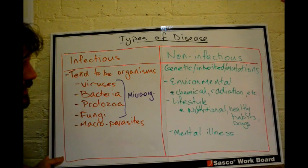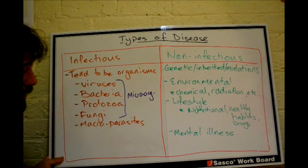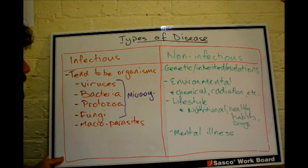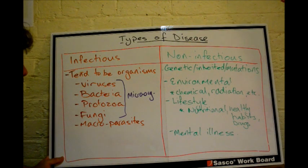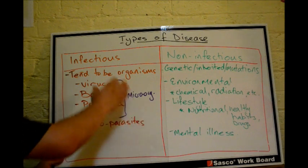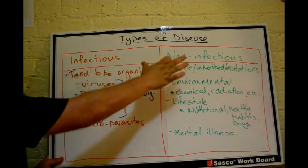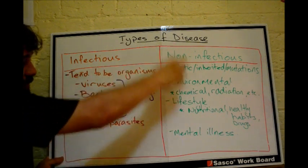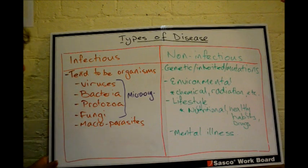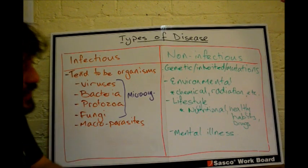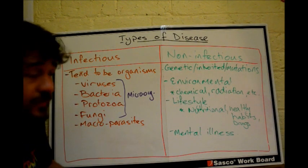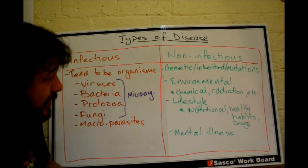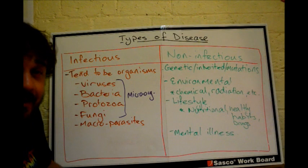That's pretty much all you need to get from this to move on in class. The big categories are infectious and non-infectious diseases, each broken down into subcategories. That covers all the types of diseases we're going to look at in this course. Good luck!